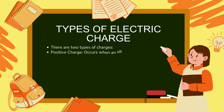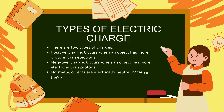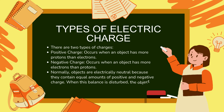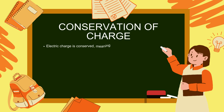Types of electric charge: there are two types of charges. Positive charge occurs when an object has more protons than electrons. Negative charge occurs when an object has more electrons than protons. Normally, objects are electrically neutral because they contain equal amounts of positive and negative charge. When this balance is disturbed, the object becomes charged.